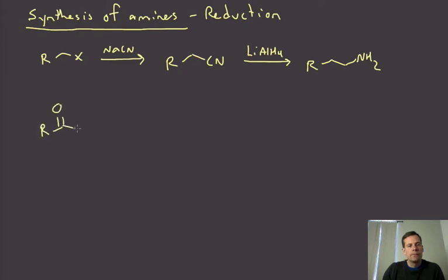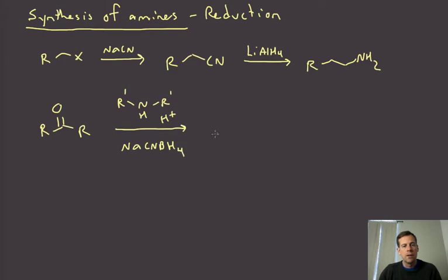We've also talked about how you can take ketones or aldehydes and do a reductive amination reaction. I'll just show this generically since we've already talked about this. If we treat the carbonyl with an amine, which can be ammonia, primary, or secondary, along with a little bit of acid and then sodium cyanoborohydride, we can do that reductive amination via the iminium ion to get to an amine.